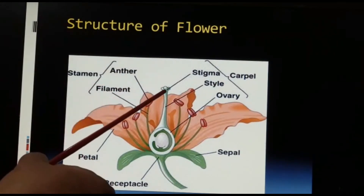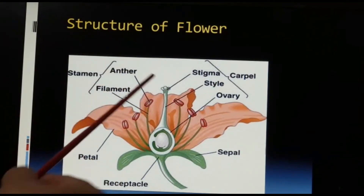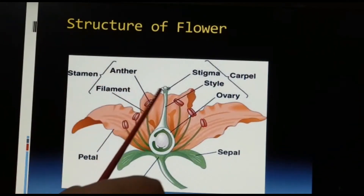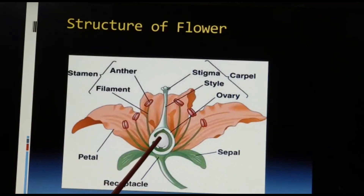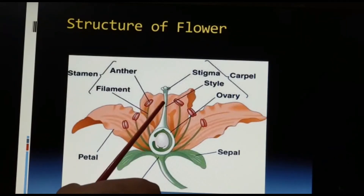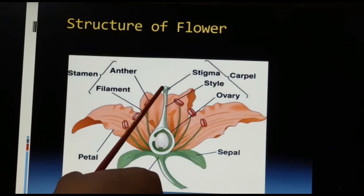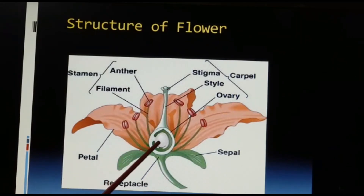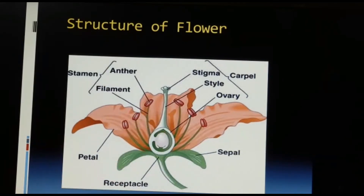The pollen comes and lands over the stigma, and the style is a tubular connection between the stigma and the ovary. It serves the purpose of transporting or carrying the pollen to the ovule for the process of fertilization.